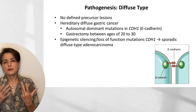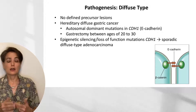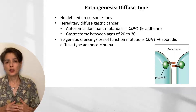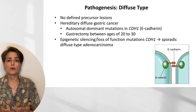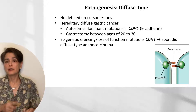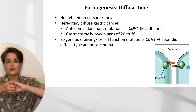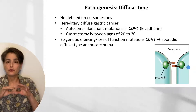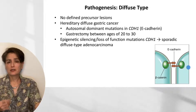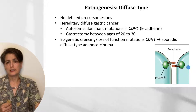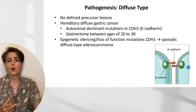The diffuse type has no defined precursor lesions, unlike the intestinal type. What we know about diffuse type gastric adenocarcinoma comes largely from hereditary diffuse gastric cancer, which is due to autosomal dominant mutations in the CDH1 gene encoding E-cadherin — whose job is to hold cells together. Once E-cadherin is lost, these discohesive cells can diffusely infiltrate. The risk of gastric malignancy in these individuals is so high that gastrectomy before age 30 is recommended. In sporadic diffuse type adenocarcinomas, CDH1 loss also occurs through epigenetic silencing or loss-of-function mutations.